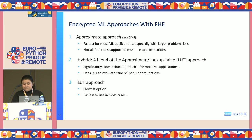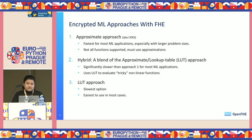The CKKS or approximate approach is the fastest for most machine learning applications, especially for larger problem sizes. The hybrid approach — a combination of approximate and lookup table — is significantly slower than the approximate approach for most ML applications. The lookup table approach is the slowest of all. These different approaches provide implementations of FHE in a machine learning setup.